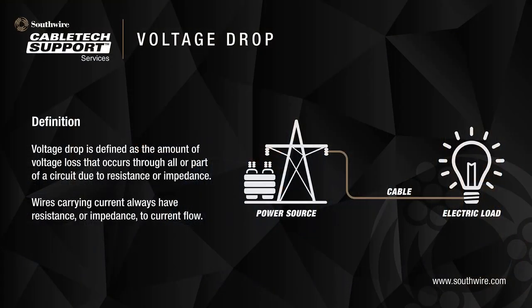What does a voltage drop in the cables have to do with the electrical system? The voltage drop has many definitions, but it may be defined as the amount of voltage loss that occurs through all or part of the electrical circuit due to the resistance or impedance.